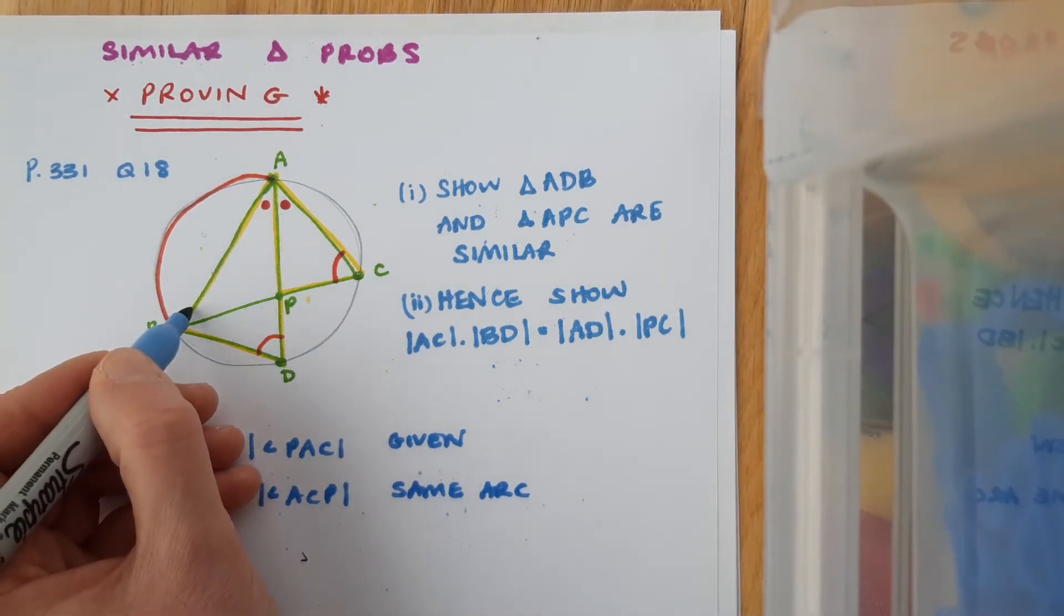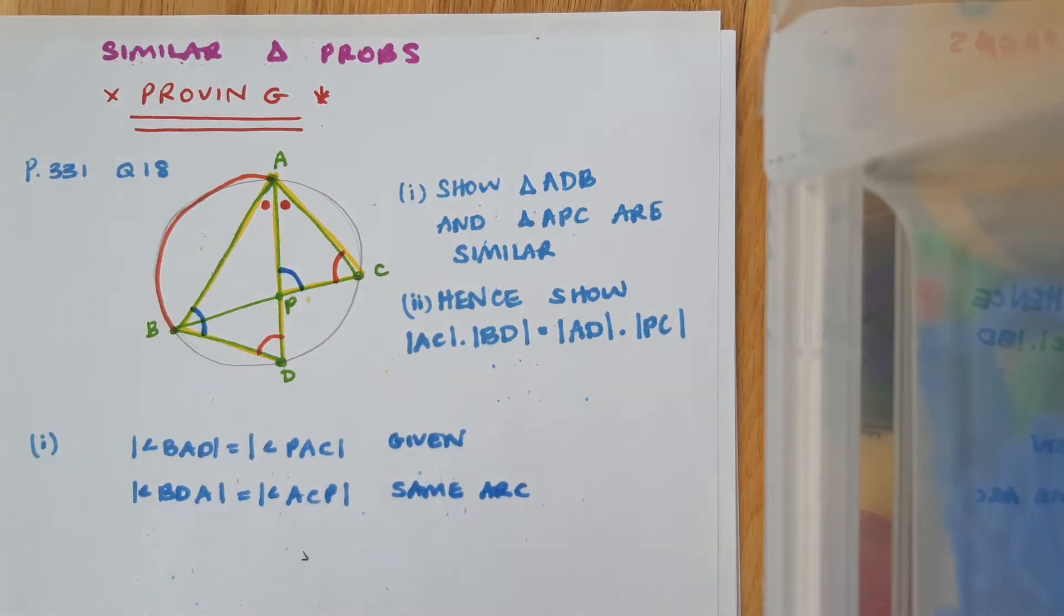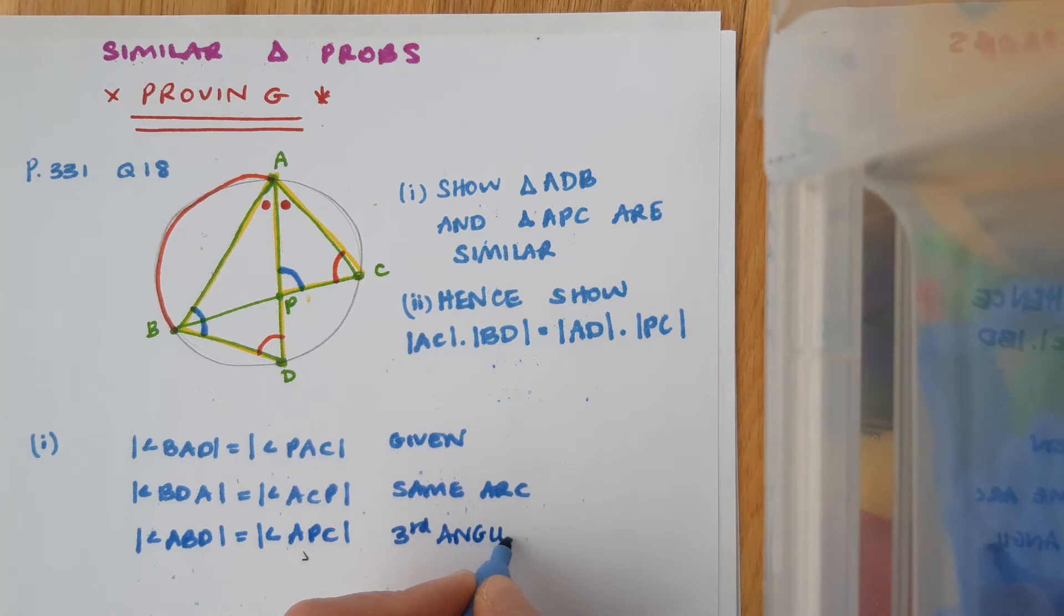So finally, I can say that this angle and this angle are also equal in size. I can say angle ABD equals angle APC. And I can just say third angle in a triangle.